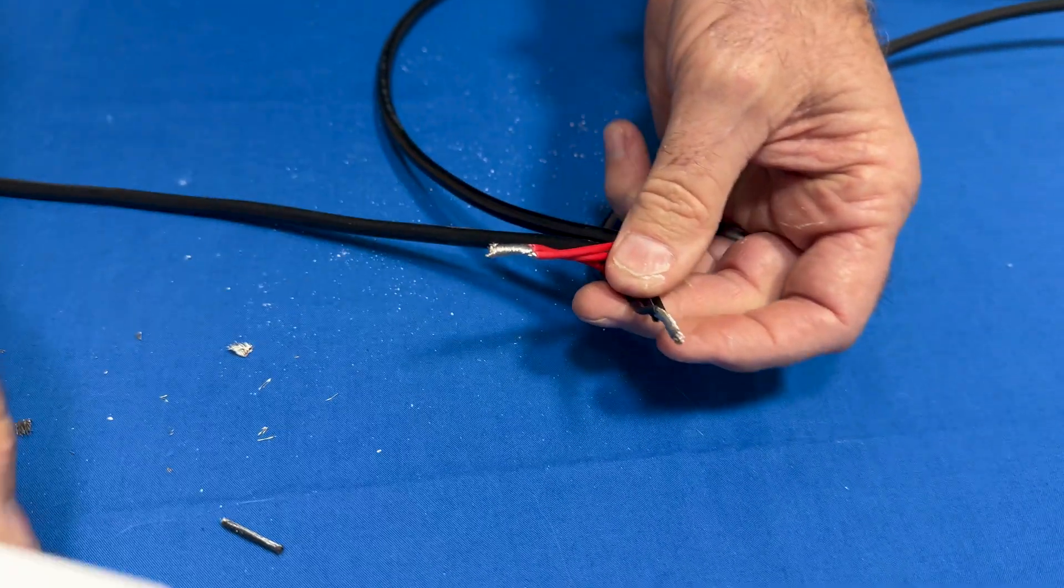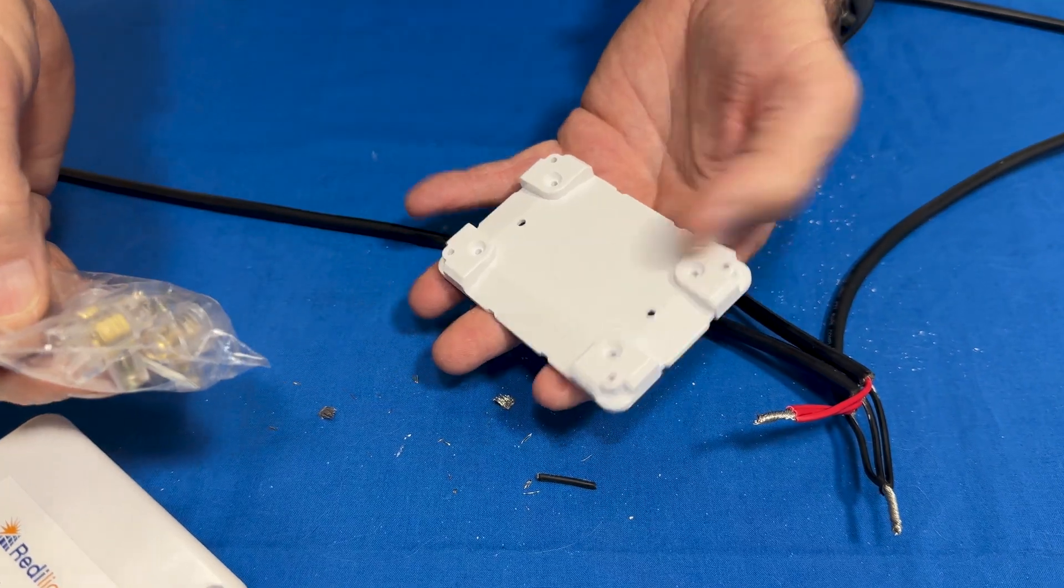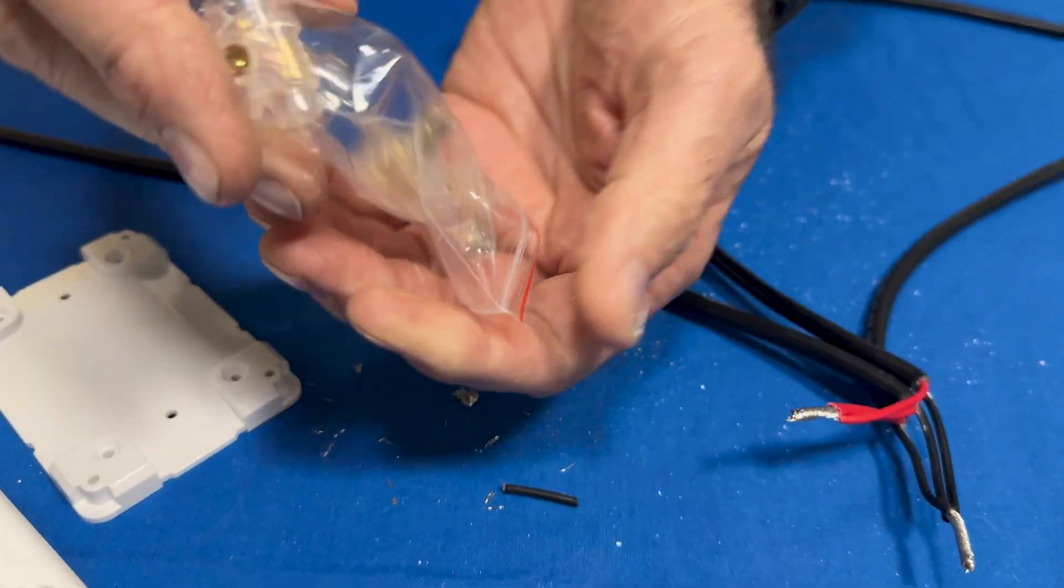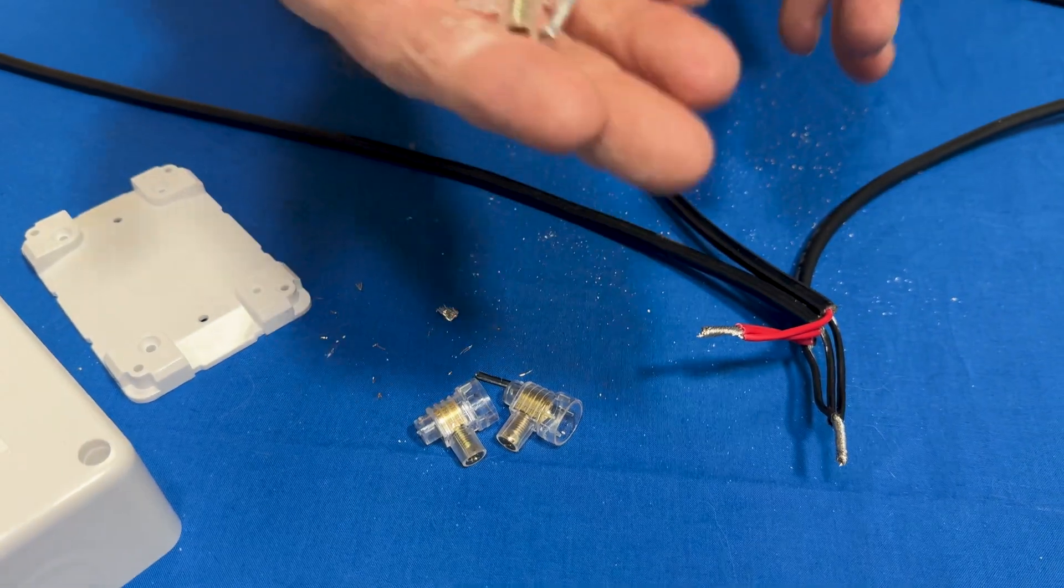Okay, just like that. Now in the junction box, this is just a standard junction box. You've got connectors. Now we're only going to use two, so there are spares.